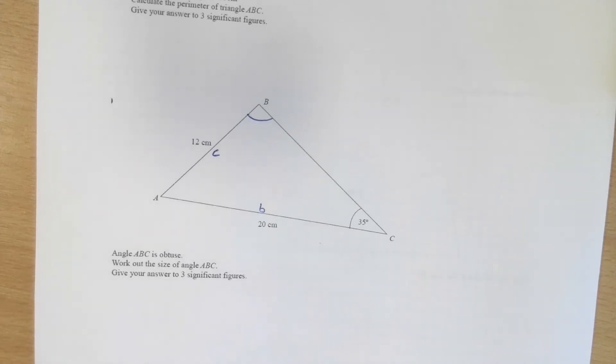Welcome back to Maths with Mr. Duffield. I have in front of me another non-right angle triangle question. I've been told the angle ABC is obtuse. That's going to be relevant to this question in a few minutes time. Working out the size of angle ABC, giving my answer to three sig figs.